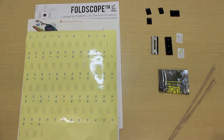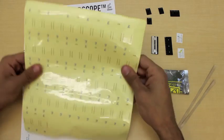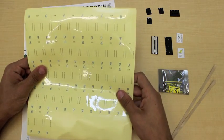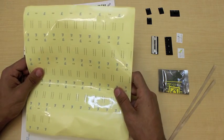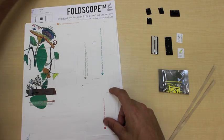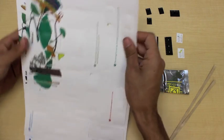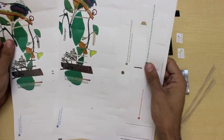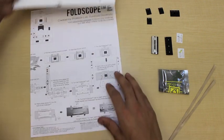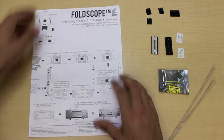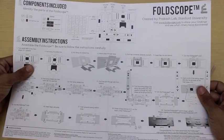When you open the package, these are the contents that you should have received. It includes two sheets of transparent stickers, which are used as cover slips for your makeshift slides. Two cut-out sheets, which contain the unfolded Foldscopes. One instruction manual, which is front and back.